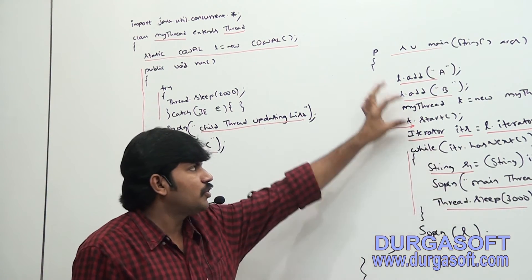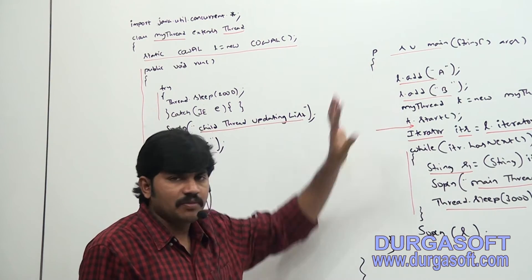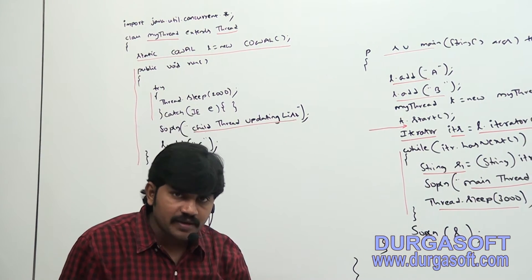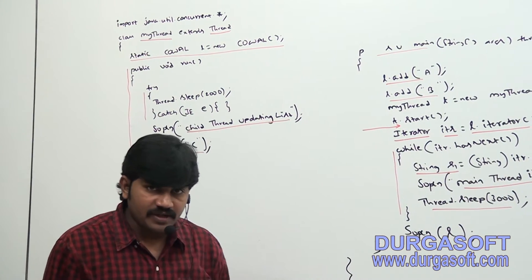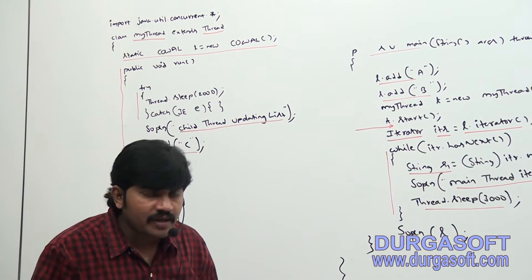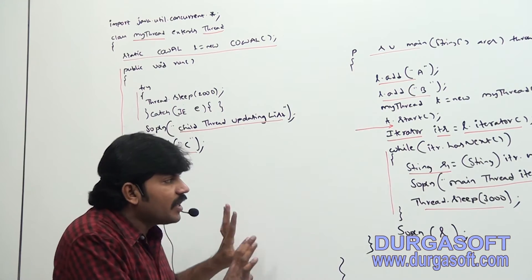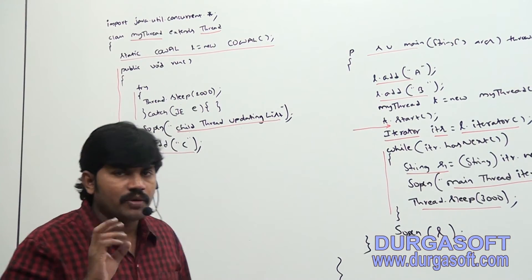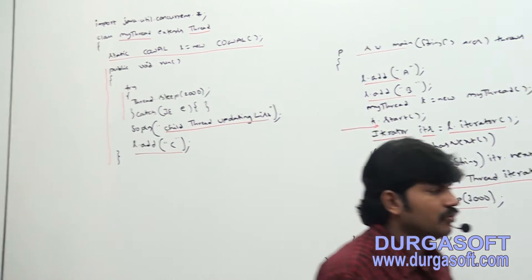That's why there is no effect at all on the main thread. The main thread can happily read whatever is present inside the CopyOnWriteArrayList. Let me execute this code and show that.